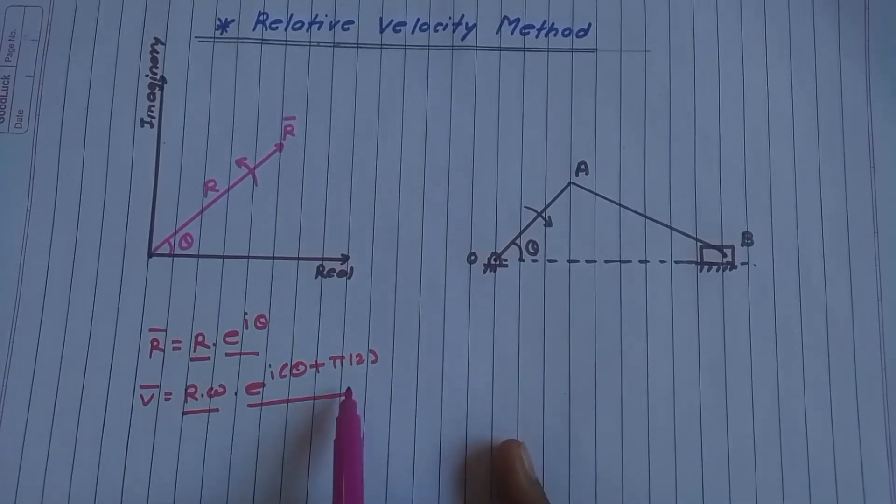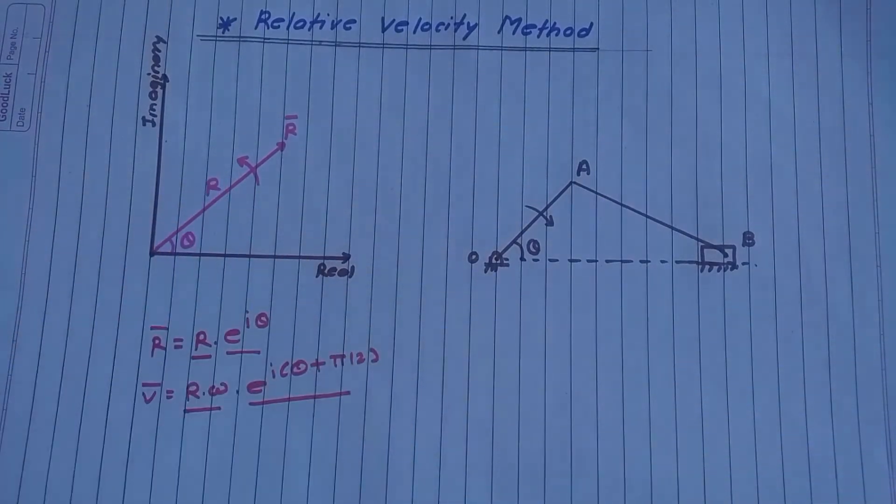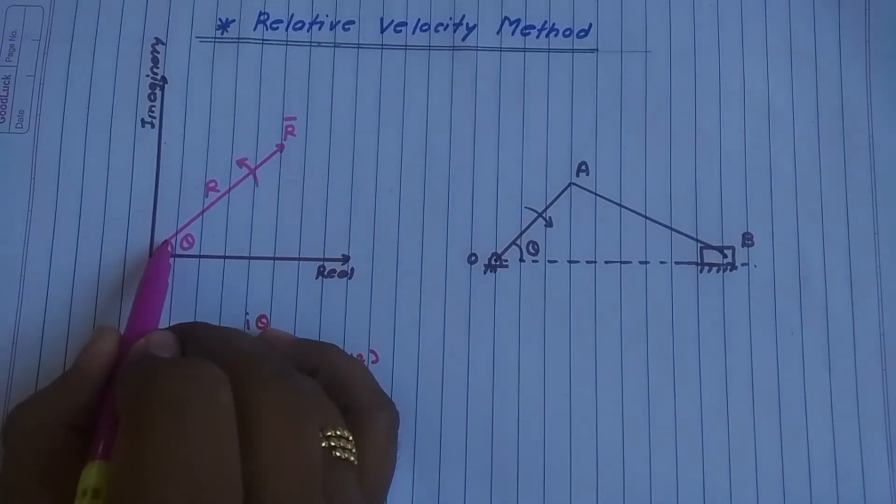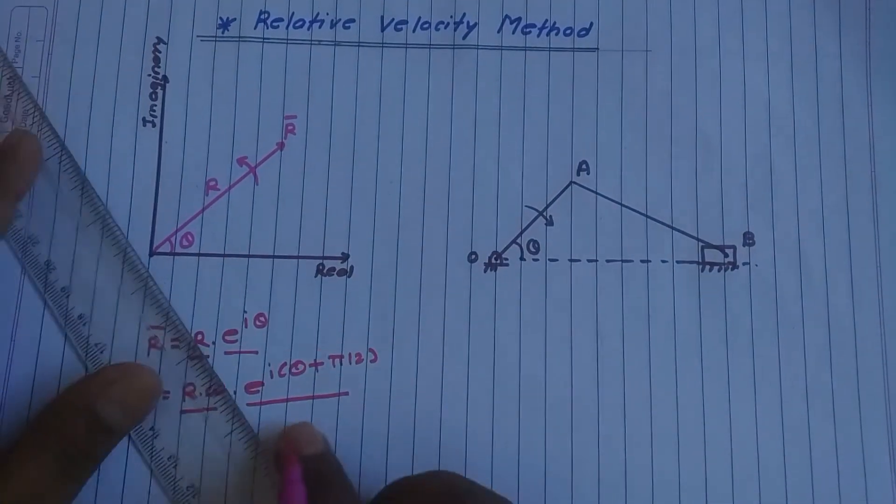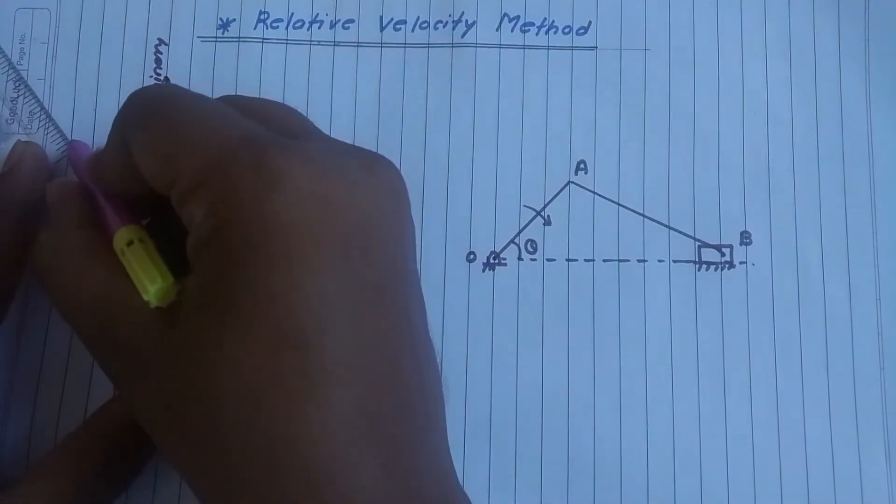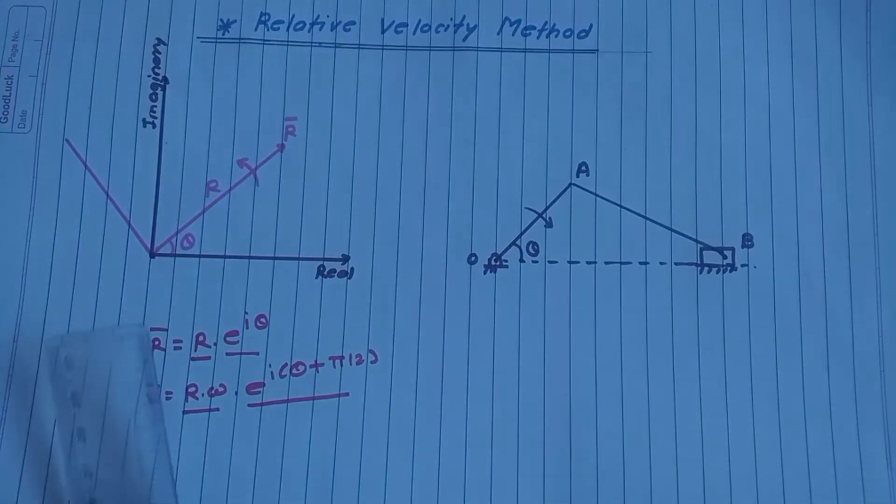The pi by 2 will be in the direction of rotation of this vector. So theta, as it is rotating anti-clockwise, plus pi by 2 means perpendicular to this vector there will be a velocity vector.